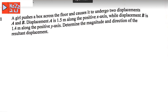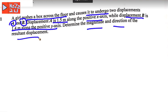A girl pushed a box across the floor and caused it to undergo two displacements, A and B. Displacement A is 1.5 meters along the positive x-axis, and displacement B is 1.4 meters along the positive y-axis. The question is: what is the magnitude and direction of the resultant displacement?